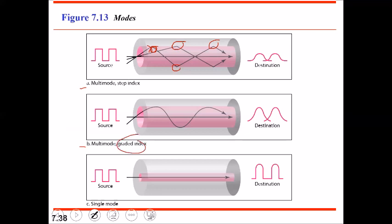In multi-mode graded index, the core is not of uniform density. The middle of the core has the highest density, and as you move towards the edge the density reduces. So in graded index propagation mode, the density of the core is not uniform — it decreases towards the edge — and the cladding is of lesser density than the core.